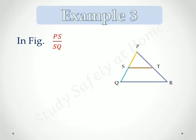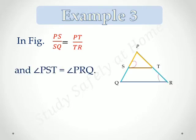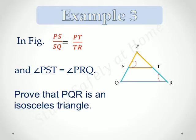In the figure PS by SQ is equal to PT by TR and angle PST is equal to angle PRQ. To prove that PQR is an isosceles triangle.